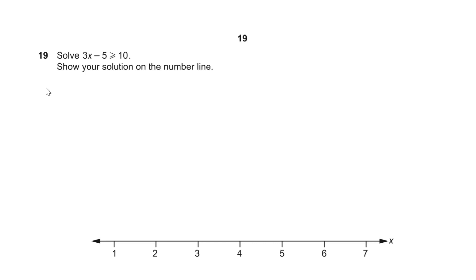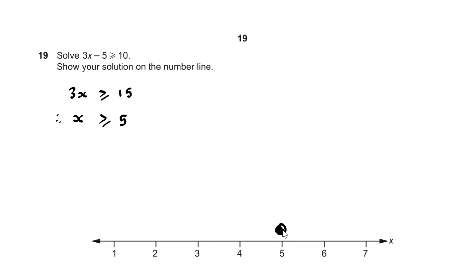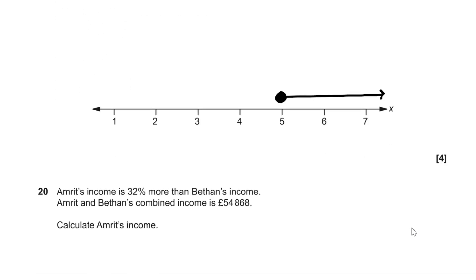Question 19. Solving 3x − 5 ≥ 10: adding 5 gives 3x ≥ 15, dividing by 3 gives x ≥ 5. On the number line, we shade a closed circle at 5 and shade to the right, because we have a weak inequality.